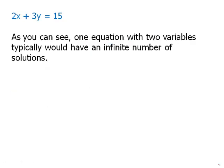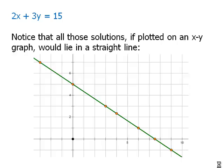In fact, one equation with two variables typically would have an infinite number of solutions. Notice all those solutions, if plotted on an x, y graph, would lie on a straight line. So all the seven solutions that we mentioned, those are the seven dots on this diagram, and they all lie on a straight line.